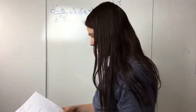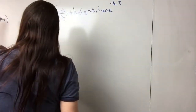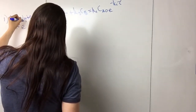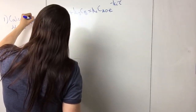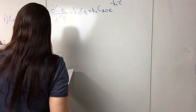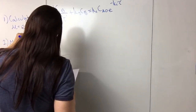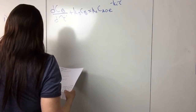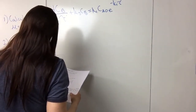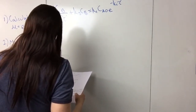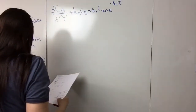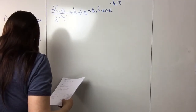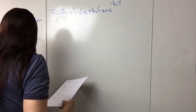There are three steps to using the integrating factor. Step one: calculate mu, the integrating factor, which is e^(∫P(x) dx). Step two: multiply both sides by mu. When you do that, you get your equation in the form d/dx[μ·y] = μ·Q(x). Step three: integrate both sides and solve for y.